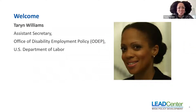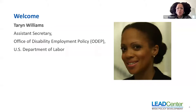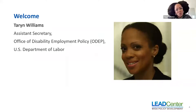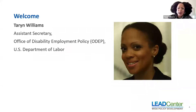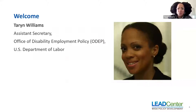Thank you for that introduction and good afternoon, everyone. It is such a pleasure to welcome you to this webinar. My name is Taryn Williams, and I'm the Assistant Secretary of Labor for Disability Employment at the Department of Labor and Head of the Office of Disability Employment Policy, or ODEP for short. For those not familiar with ODEP, we are a sub-cabinet agency within the Department of Labor and report directly to the Secretary. Congress established ODEP 20 years ago to create a federal agency dedicated to working across policies, programs, and agencies to promote disability employment.